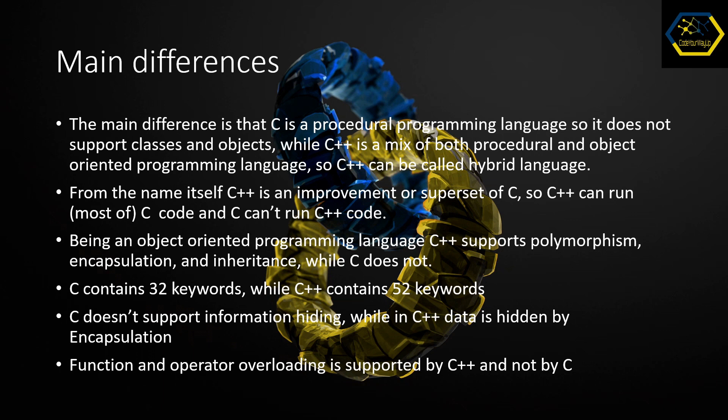Being an object-oriented programming language, C++ supports polymorphism, encapsulation, and inheritance, while C does not. C contains 32 keywords while C++ contains 52 keywords. C doesn't support information hiding, while in C++ data is hidden by encapsulation. Function and operator overloading is supported by C++ and not by C.